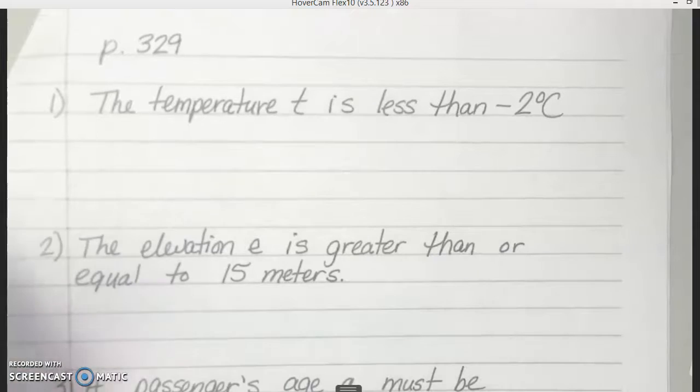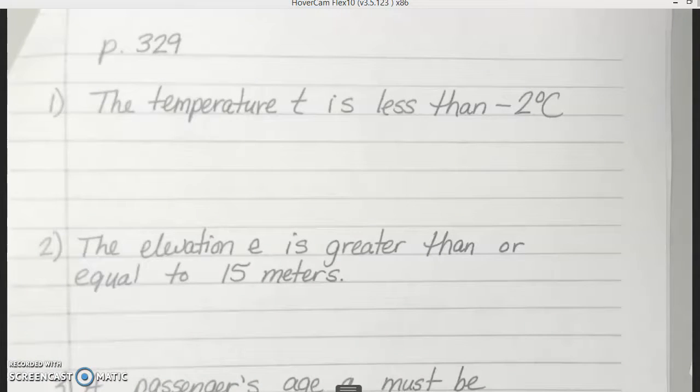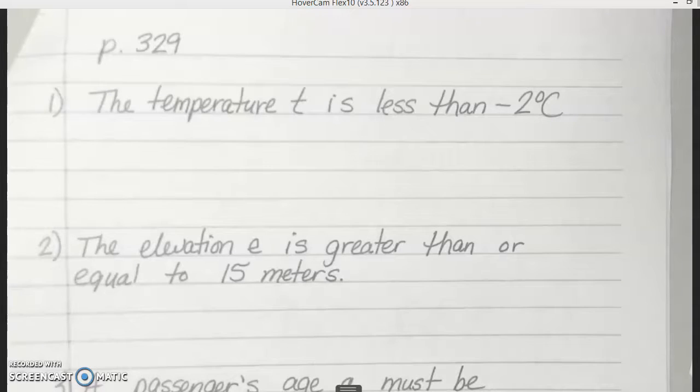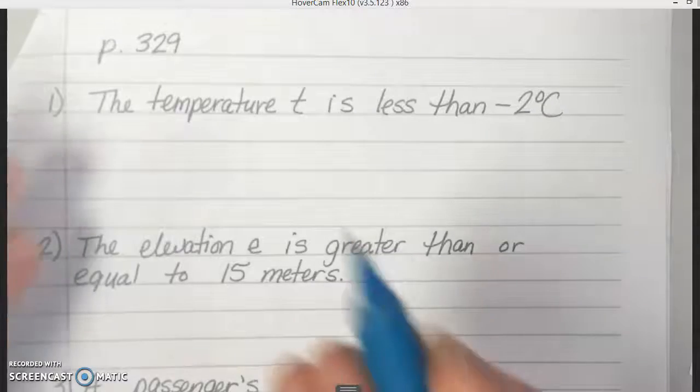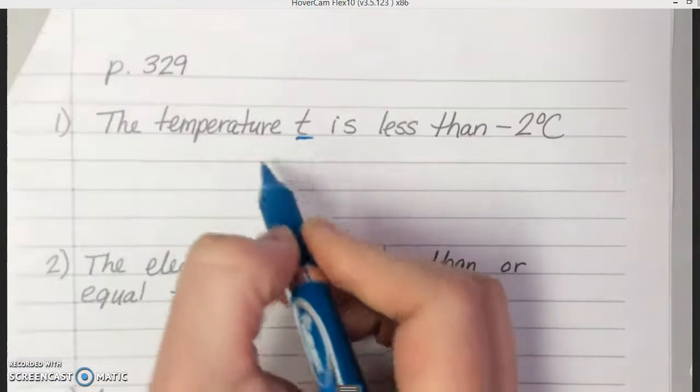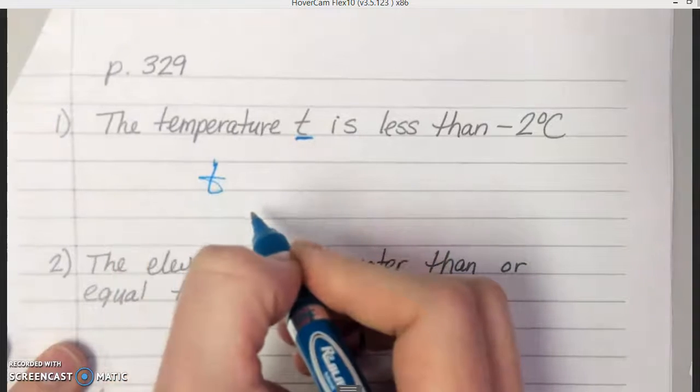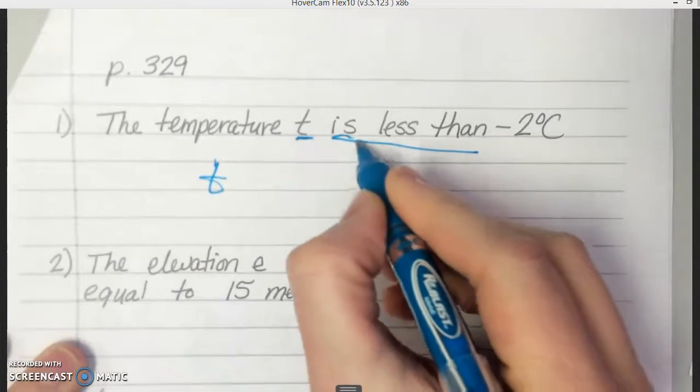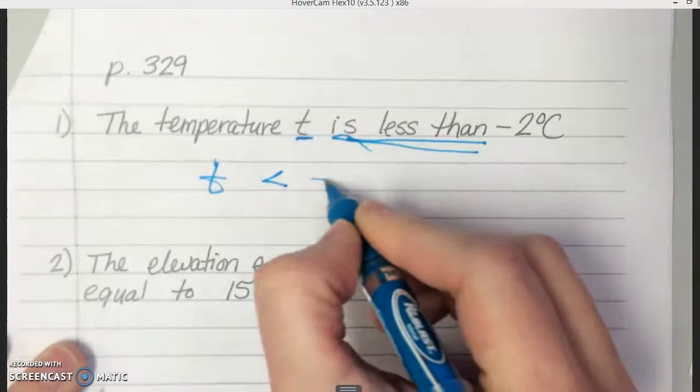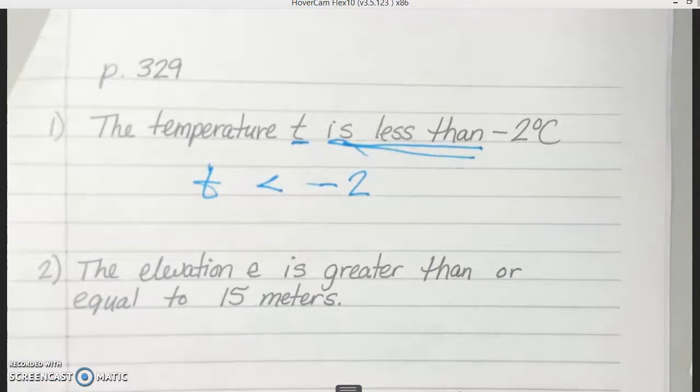Alright, go ahead and turn in your book to page 329. So for number 1, 2, and 3, we're going to be writing the inequality for the word sentence. So for the first one, we have the temperature T is less than negative 2 degrees Celsius. So breaking this down, the temperature T, it actually tells us which variable we need to use. We need to use the variable T for temperature. So here, is less than, got off there, is less than, and then here, we just use negative 2. We don't have to put degrees Celsius with it. So just T is less than negative 2.